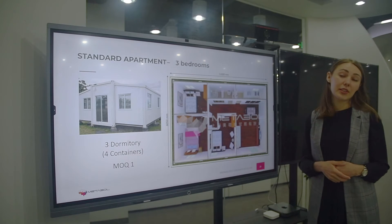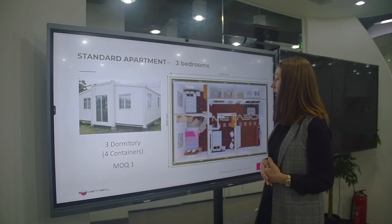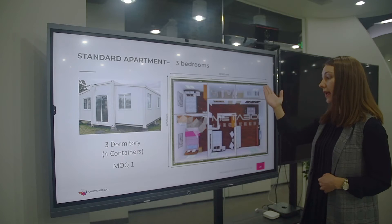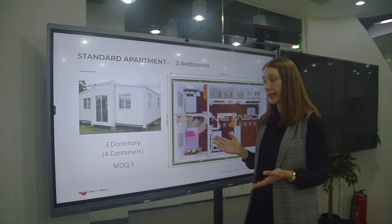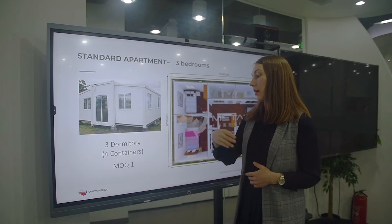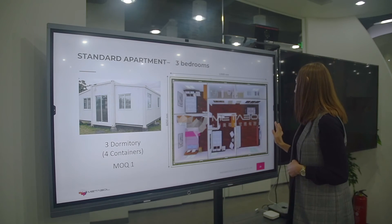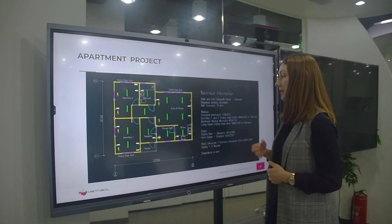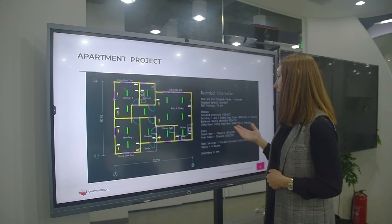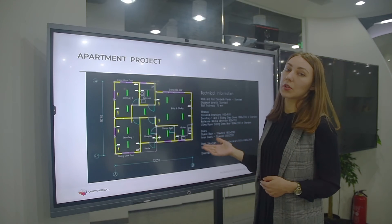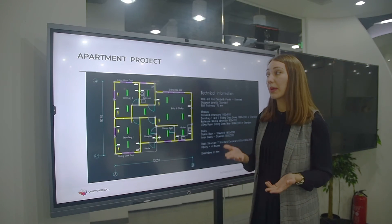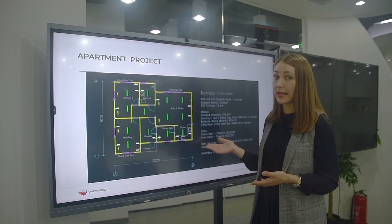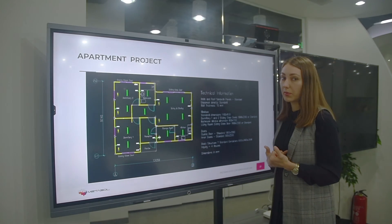The three-bedroom standard apartment has three bedrooms, a living room, a kitchen, and a bathroom. Because it uses four containers, the MOQ is one set. Here is the layout design in CAD. We can design it for you — if you already know what you want or have an existing design, you can send it to us and we can make the project based on that.